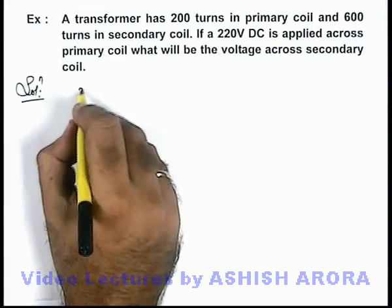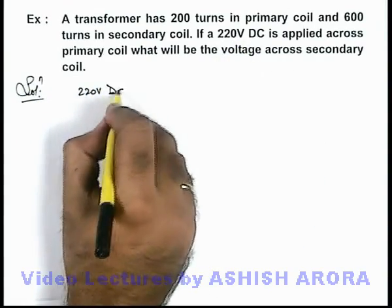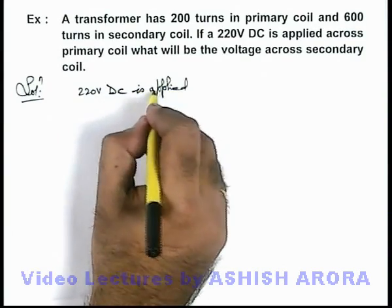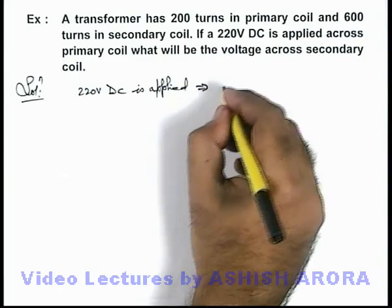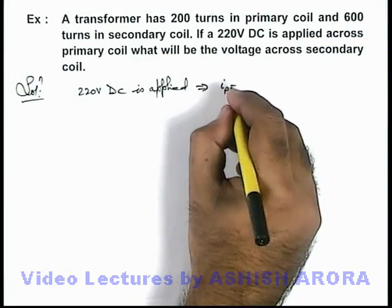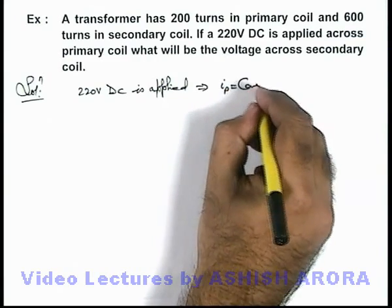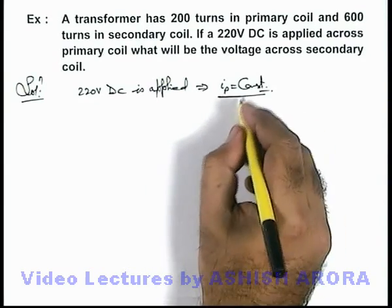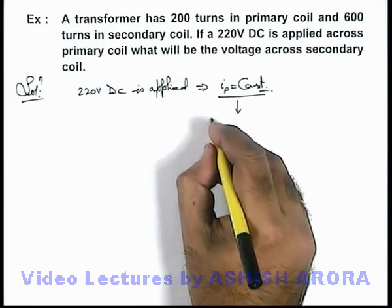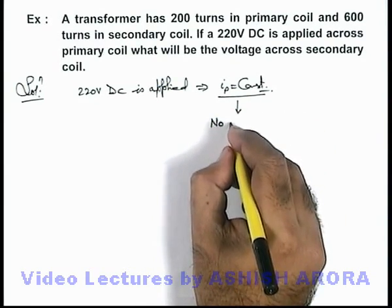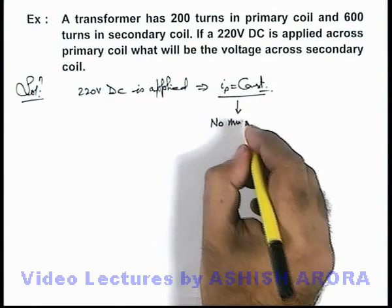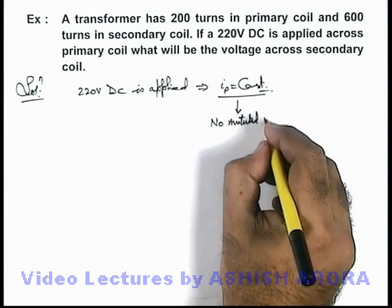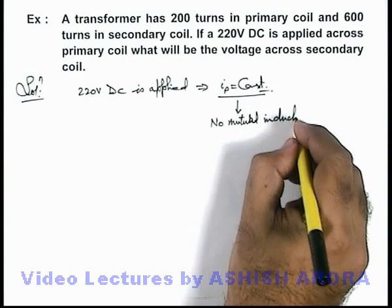Here you can see that 220 volt DC is applied. In the case of a DC voltage, the current in the primary coil will be at a constant, steady value. Since the current is not varying with time, we can directly write that there will be no mutual induction.